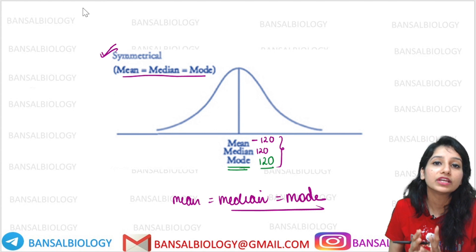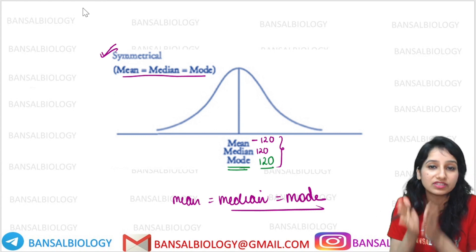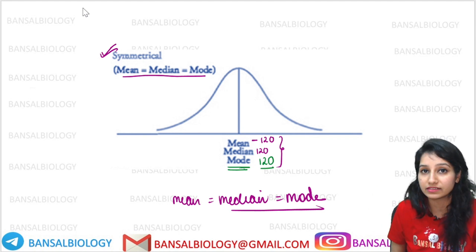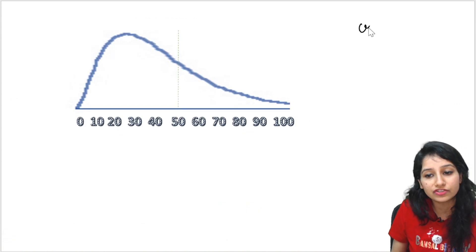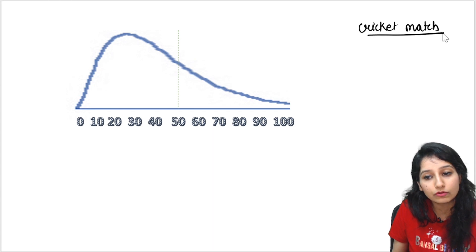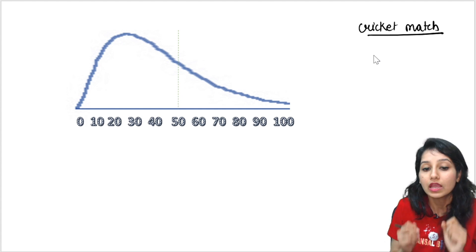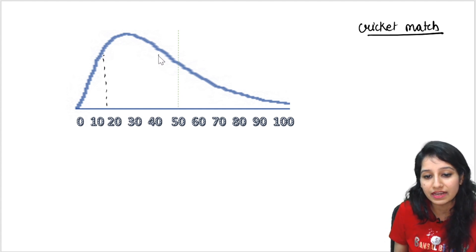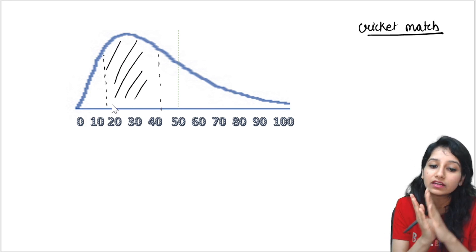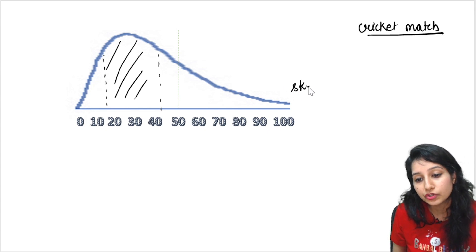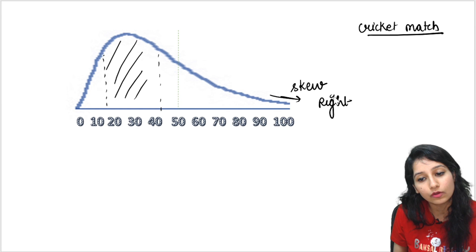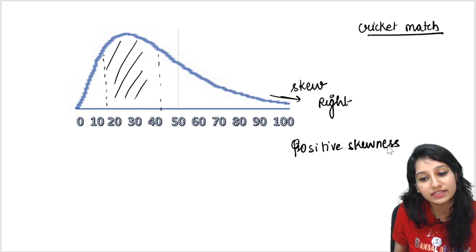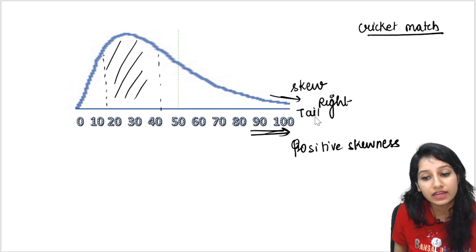Besides that, there is another thing we call skewness. We always have conditions where the center value is not symmetric. For example, cricketers may score more towards one side. If the tail of the graph is on the right-hand side, this type of skewness is called positive skewness — positive skewness means the tail is present on the right direction.